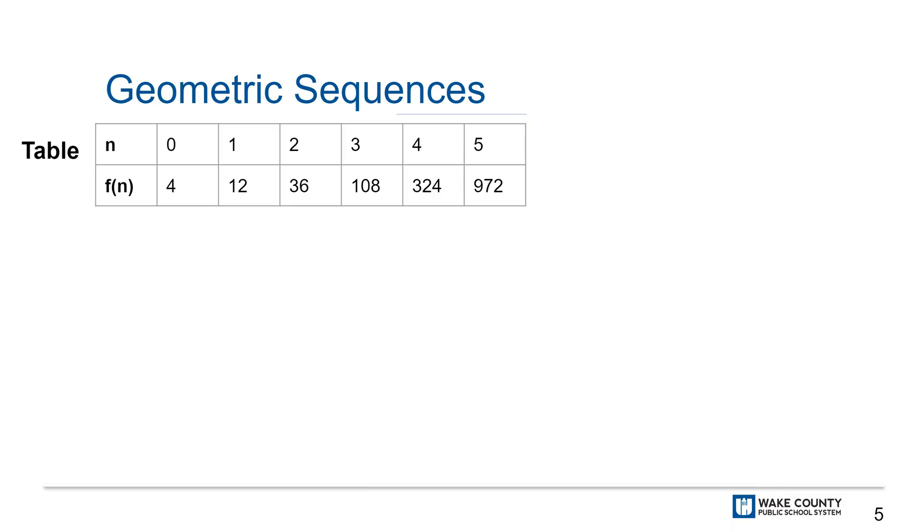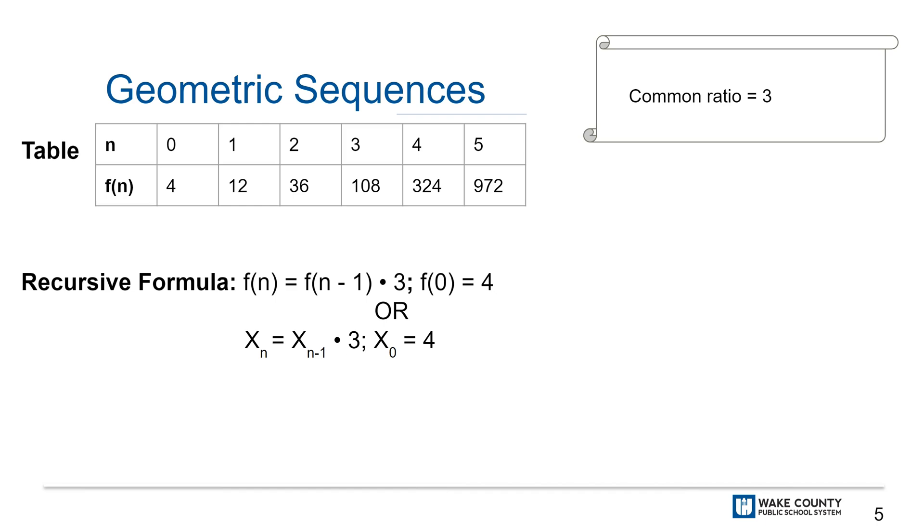Here's an example of a geometric sequence in table form. The common ratio for this sequence is 3 because the bottom row of values is increasing by a factor of 3. A recursive formula would look like f(n) = f(n-1) × 3, f(0) = 4, or x_n = x_(n-1) × 3 starting from x_0 = 4.